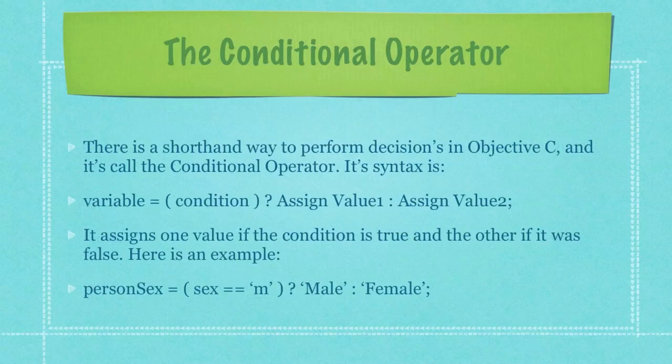There's also a shorthand way to perform decisions in Objective-C and it's called the conditional operator. You can see its basic syntax here in the second bulleted item and a real world example in which we are checking whether a character has been assigned the character m and depending upon what variable has been assigned we're either going to assign the string male or female back to the variable which in this circumstance is person sex.